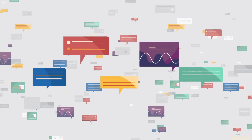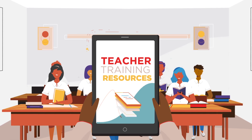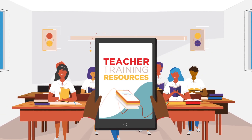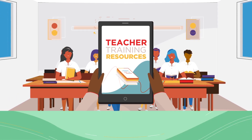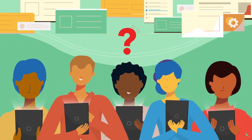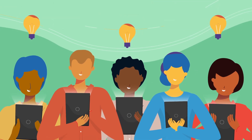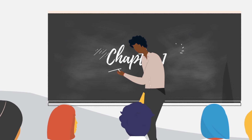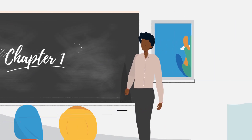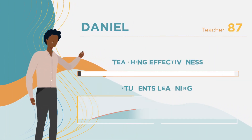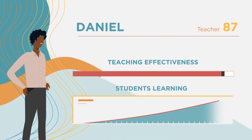Let's say you're implementing a program to train teachers to use a new technology in the classroom to improve student reading scores. To be successful, teachers need to understand how to use the technology, incorporate it into their teaching, and become more effective due to the technology — and student learning needs to improve.